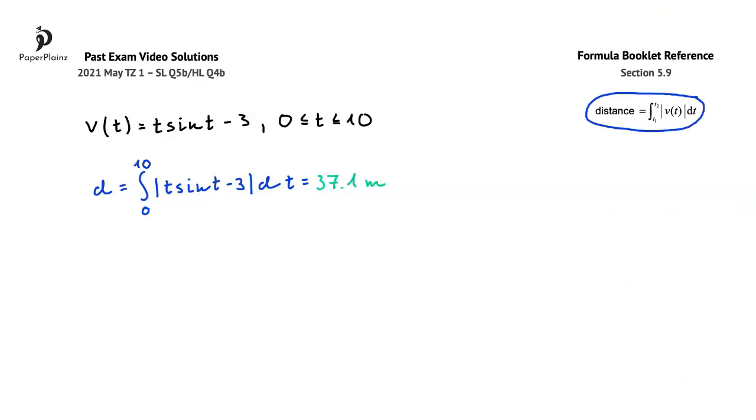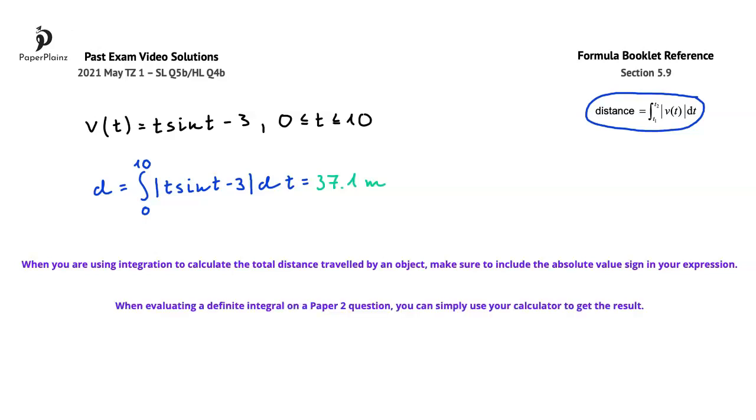Let's see two exam-taking tips to help you maximize your marks on similar questions. The first one is that when you're using integration to calculate the total distance traveled by an object, make sure to include the absolute value sign in your expression. The second tip is that when evaluating a definite integral on a paper 2 question, you can simply use your calculator to get the result. As for work shown, it is enough to write down the substituted distance formula, as we've done here.